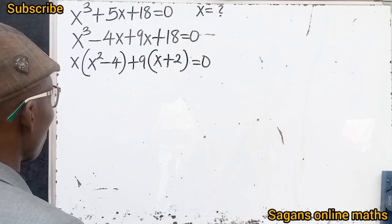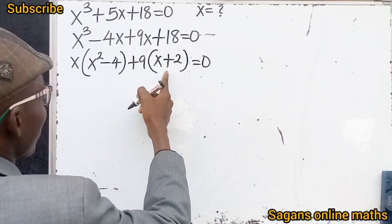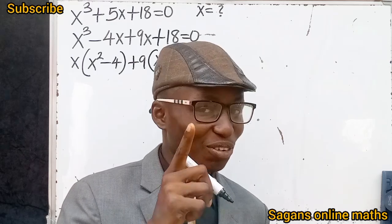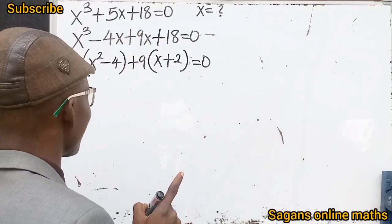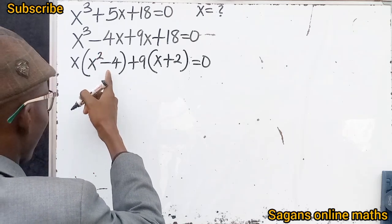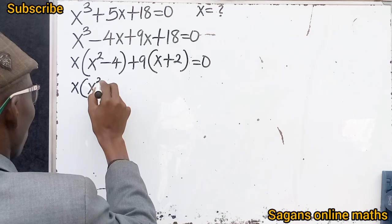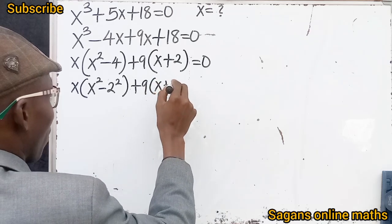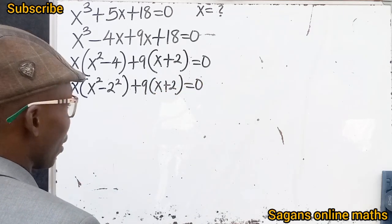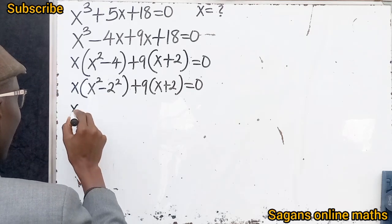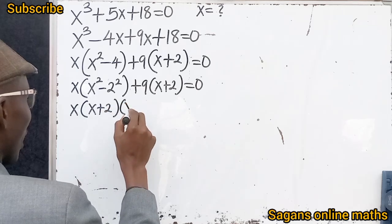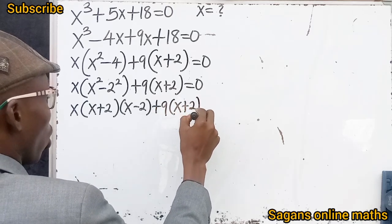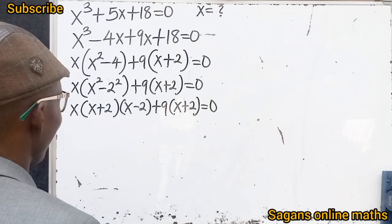Now this is not a quadratic equation, take note. But we are not done — you can still do something. We have x squared inside, so we can see the difference of two squares here. So x(x² minus 4) can be written as x into (x plus 2)(x minus 2), because x² minus 4 is the difference of two squares. Then plus 9(x plus 2), all this equals zero.